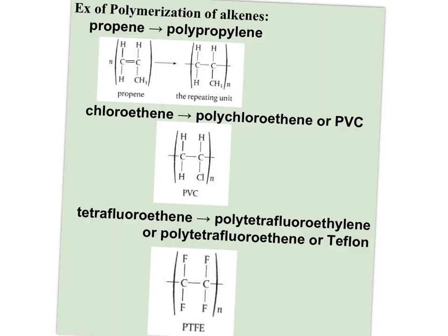Here are some common polymers of alkenes. Propene has three carbons, and they've drawn it with the third carbon at a 90-degree angle to make it more obvious how it bonds to itself — when the double bond opens up, you can see another monomer can easily bond on, with that third carbon tucked out of the way like a branch off the polymer. That forms polypropylene, which is often used in dry-weave fabrics to wick moisture away and also in long underwear.